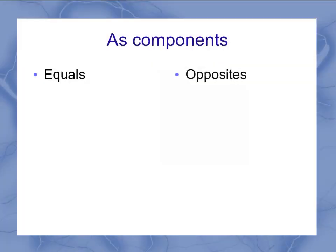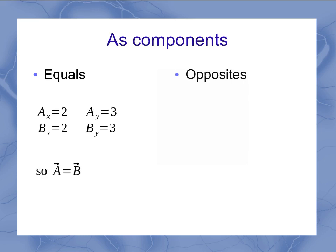If I represent my vectors as components, it's a little bit easier to see what's going on. If I've got two vectors, a and b, then their x components have to be exactly the same and their y components have to be exactly the same if I'm going to say those two vectors are equal to each other. It's really important that all of the components must be equal. You could have two vectors that both have an x value of 2, but if their y values aren't the same, then the two vectors aren't the same.